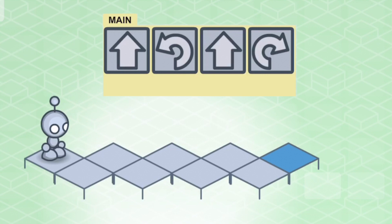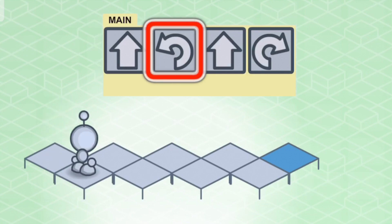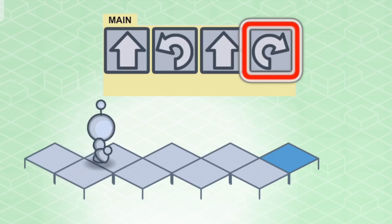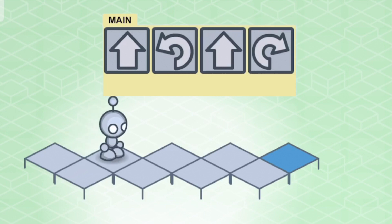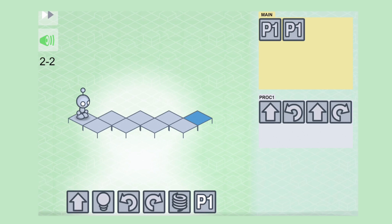For example in this challenge we see that Lightbot will have to move forward then turn left then move forward again and then turn right. Then Lightbot will have to repeat that same sequence of commands three more times. So if we put that sequence of commands in the procedure 1 file then in the main file you only have to give the robot the P1 command four times followed by one light command and you will accomplish the goal.